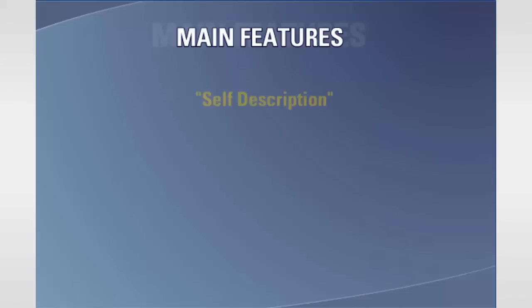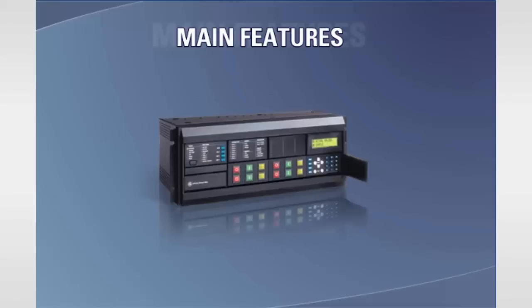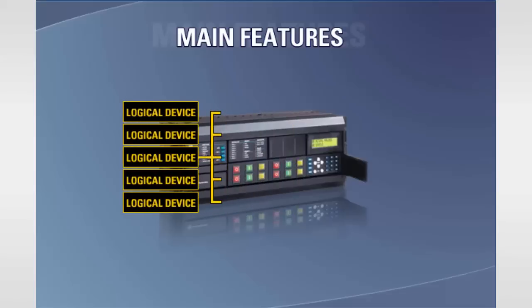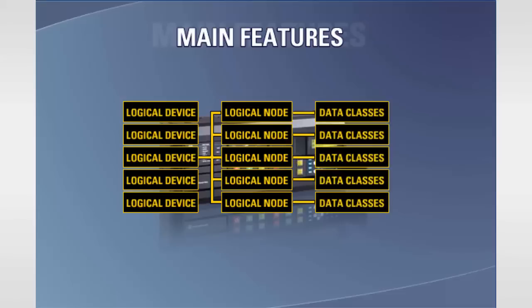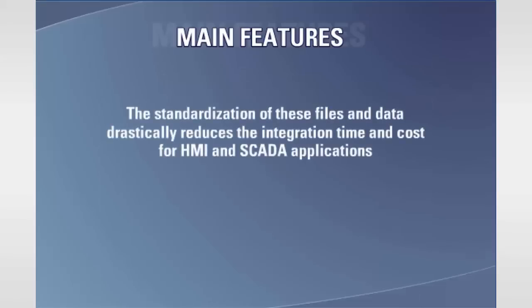IEC 61850 also supports what is termed as self-description. This refers to the ability of a device to be browsed to determine what data is contained within it. Each physical device, such as a relay, may contain one or more logical devices. Each logical device may contain one or more logical nodes, such as a circuit breaker or transformer. Each logical node contains a predefined set of data classes which contain data. The logical node data can be browsed, similar to using a finder or explorer to search computer files. The standardization of these files and data contained within the relays drastically reduces the integration time and cost for HMI and SCADA applications.